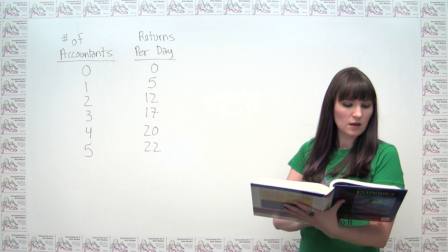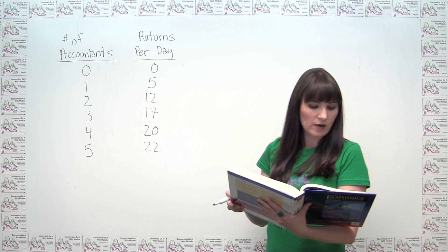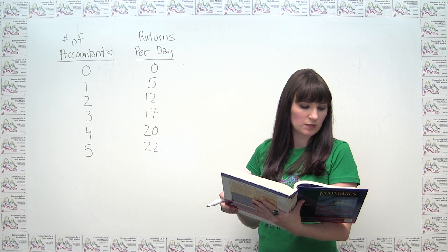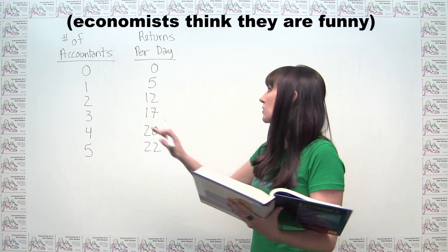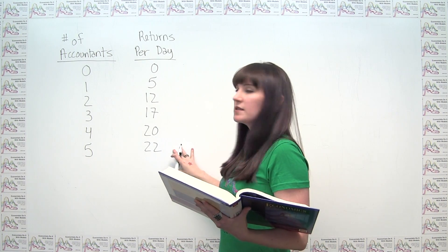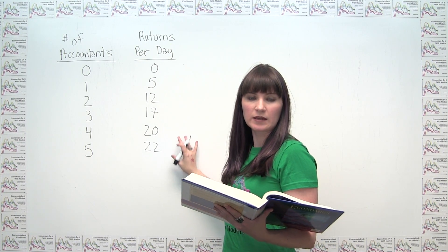The problem states, the following table shows total output in tax returns completed per day of the accounting firm Hoodwink and Finagle, and we're given number of accountants versus the number of returns per day.